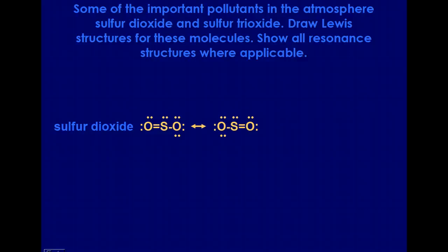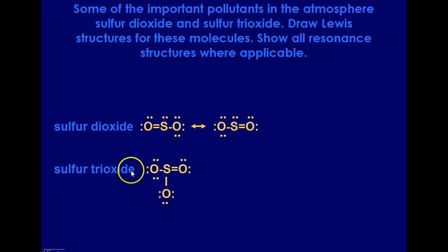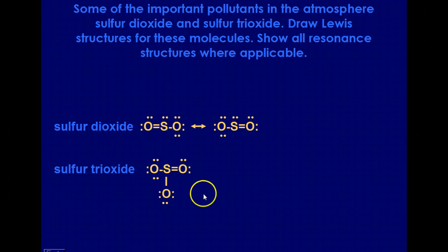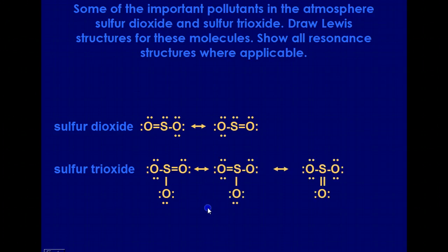With sulfur trioxide, we have 24 valence electrons — 12 pairs. Sulfur goes in the center, connected with one pair of electrons to each of the three oxygen atoms. That leaves nine pairs: three on each oxygen. But that accounts for all remaining pairs, leaving sulfur without its fourth pair. So a double bond forms between sulfur and one oxygen. However, just as with sulfur dioxide, there's no preference for which oxygen forms the double bond — it can be the right, left, or downward-facing oxygen. Because this bond is distributed among three different atoms, it's more like a bond and a third being distributed, as opposed to the bond and a half seen in sulfur dioxide.